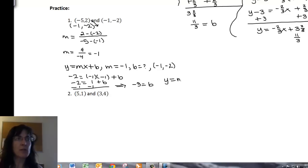Then I can put that into the y equals mx plus b form, and I have y equals, my slope was negative 1, x minus 3. And I can rewrite that, y equals negative x minus 3.